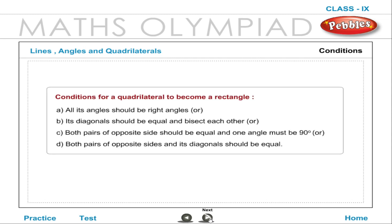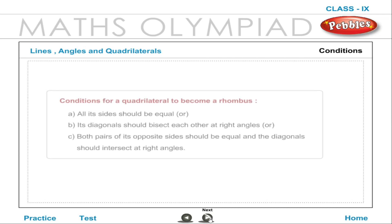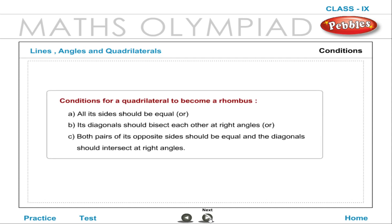Conditions for a quadrilateral to become a rectangle: All angles should be right angles; or its diagonals should be equal and bisect each other; or both pairs of opposite sides should be equal and one angle must be 90 degrees; or both pairs of opposite sides and its diagonals should be equal. Conditions for a quadrilateral to become a rhombus: All sides should be equal; or its diagonals should bisect each other at right angles; or both pairs of opposite sides should be equal and the diagonals should intersect at right angles.